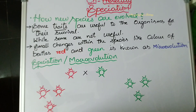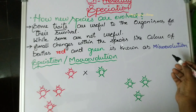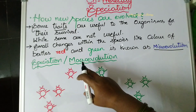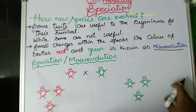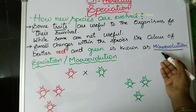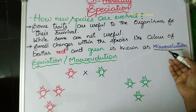We have already learned about variation in beetles — red, green, and blue color beetles. From that topic, we identified micro-evolution. Small changes within the species, like color changes in beetles from red to green, is known as micro-evolution. To observe actual evolution it will take thousands of years, but some evolutions can be observed within a short period of time — that is micro-evolution.